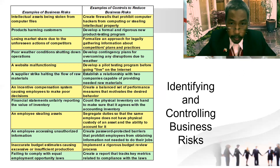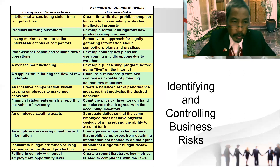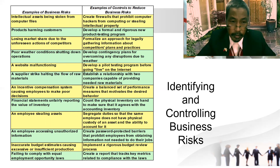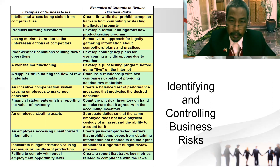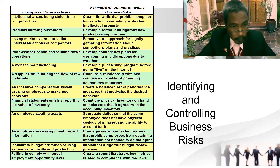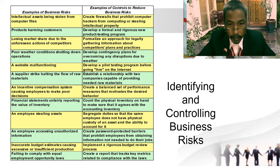Number seven — an incentive compensation system causing employees to make poor decisions. Create a balanced set of performance measures that motivates desired behavior. Address poor working attitudes by making compensation profits tied to good performance behavior. Number eight — financial statements unfairly reporting the value of inventory. This is malpractice. Conduct physical inventory counts to make sure they agree with the accounting inventory records.